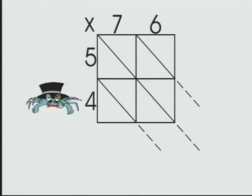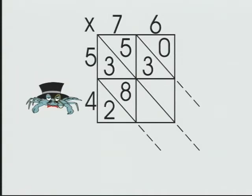Now we can multiply. 5 times 7 equals 35. 5 times 6 equals 30. 4 times 7 equals 28. 4 times 6 equals 24.